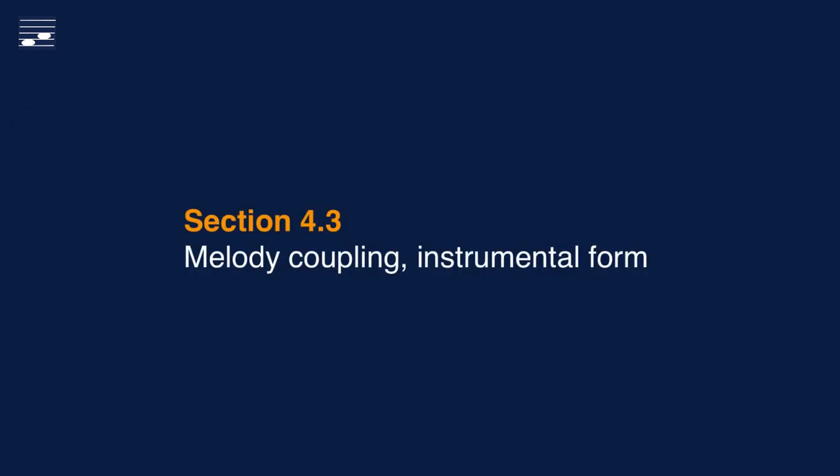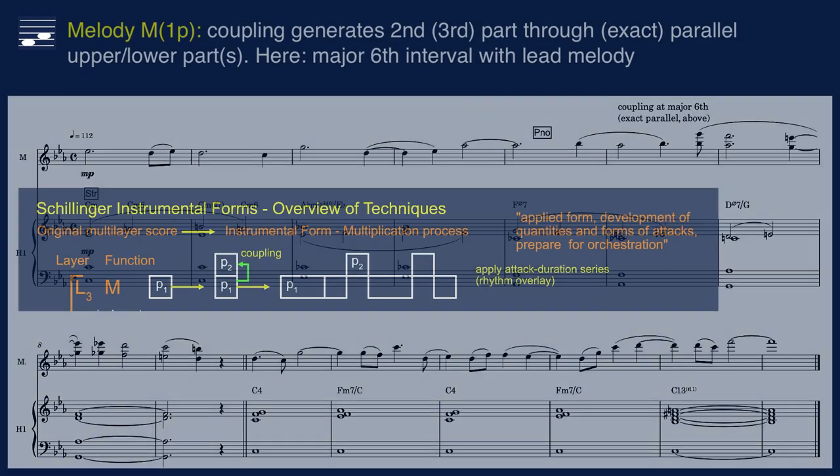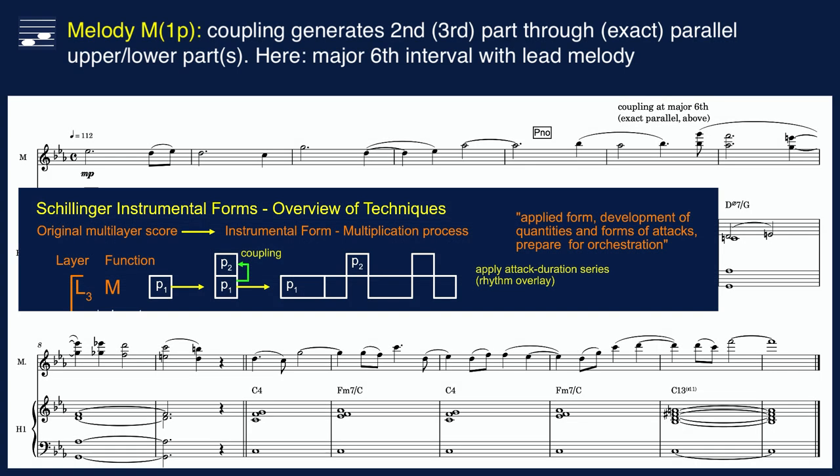Let's return to the single part layer and see how we may add a coupled part to a given melody, a subject also discussed in the Strata Harmony tutorials. In the diagram, melody coupling is shown as a two-step process: first the coupling, then the multiplication process with a rhythmic pattern overlay — again a type of arpeggio.